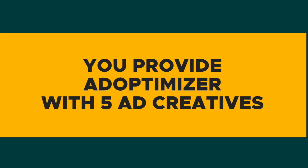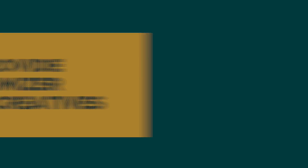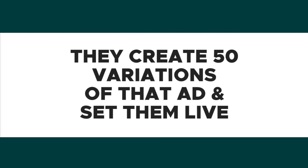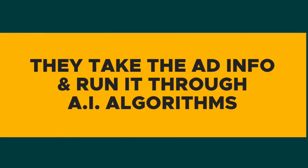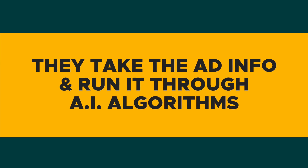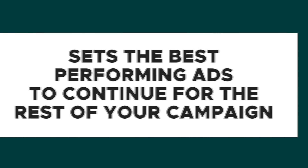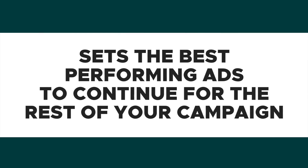So what Ad Optimizer does is it takes all of the guesswork out of creating those Facebook ads and uses artificial intelligence to make sure that you are running the best performing campaigns. You provide Ad Optimizer with five different ad creatives and from there they create 50 variations of that ad and set them live. After running for a day, they run the data through their AI tool to optimize your ads for your target audience and set the best performing ads to run for the rest of the campaign, saving you lots of money.